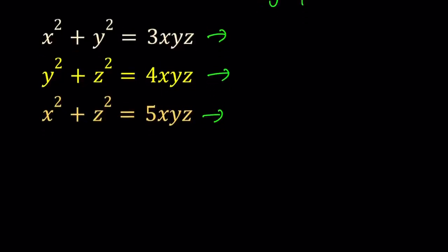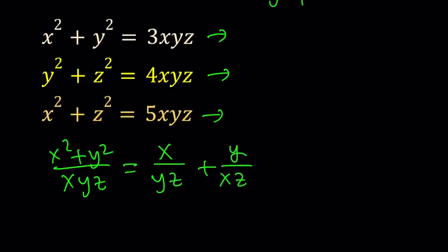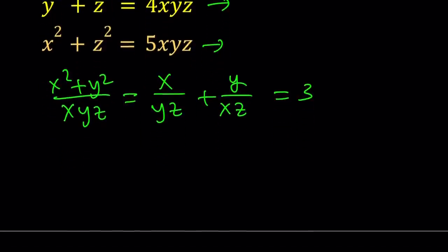So the first equation gives me the following. x squared plus y squared divided by x, y, z is equal to 3, right? And that is going to give me, actually, I could probably just split them up and then set it equal to 3. So this is going to give me x over yz plus y over xz. And as you know, this is going to equal 3. Great.